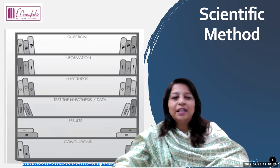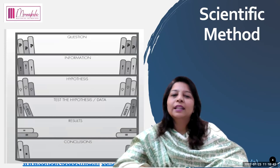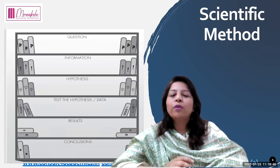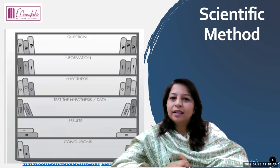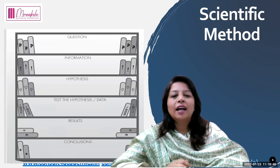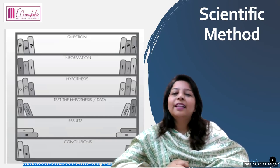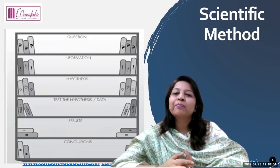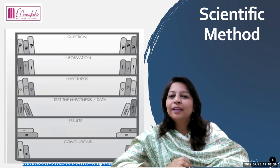Another is the scientific method graphic organizer. In the scientific method, we always start with a question or problem, then write the information that is in our hand. Based on that information, we give a hypothesis. Then we test the hypothesis, gather data, and record results and conclusions.